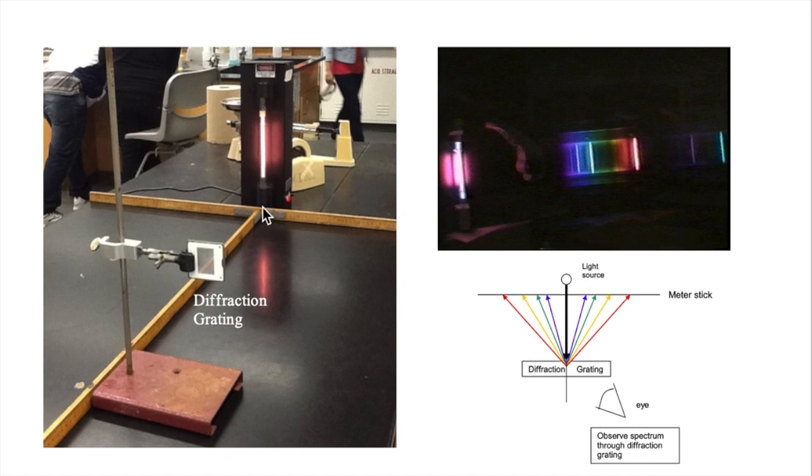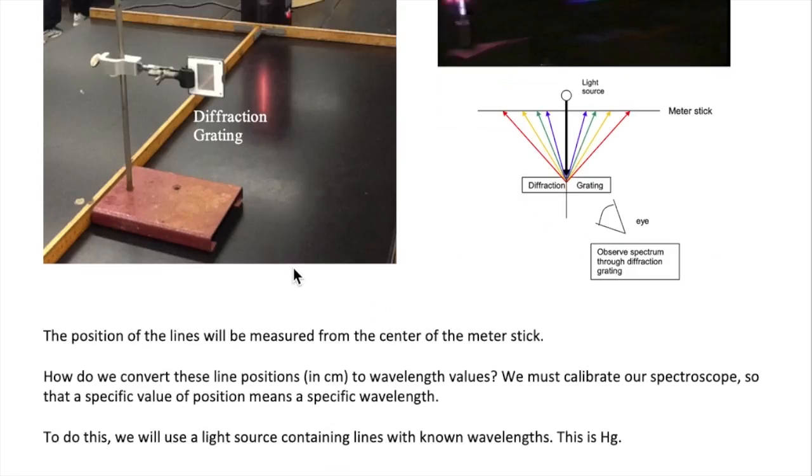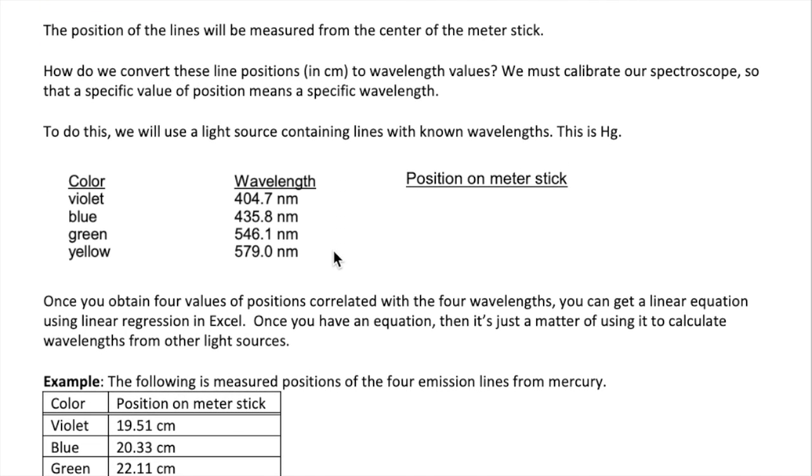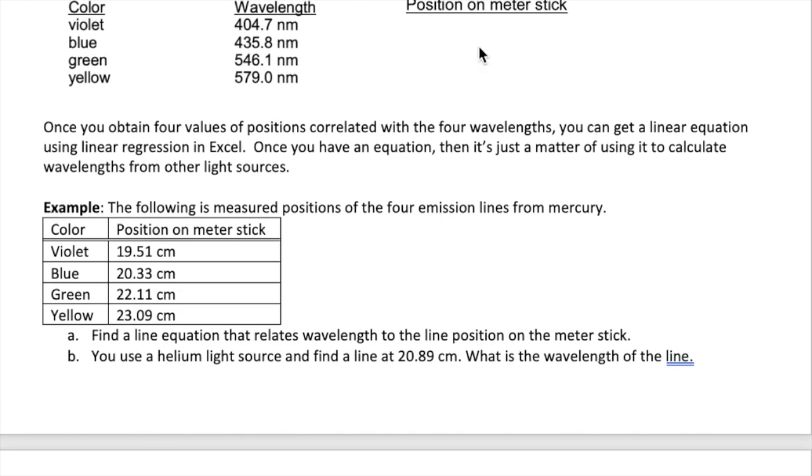The lines will be positioned along the meter stick, so you can measure their distance from the center of the meter stick. You can then convert these distances to actual wavelengths. To do that, you're going to need a conversion equation. This can be obtained by calibrating the spectroscope, which just means to measure the distances of the lines with known wavelengths. We will do this using a mercury gas discharge tube. Mercury has four lines corresponding to the four wavelengths shown here. What you will do is measure the position of each of these lines on the meter stick. Once you have all the values, you can then do a linear regression in Excel to obtain your line equation.